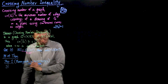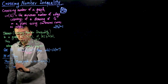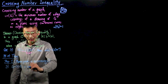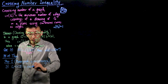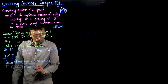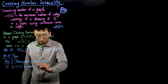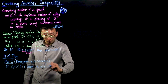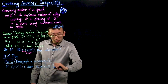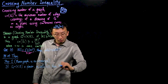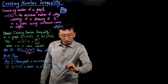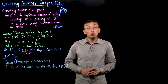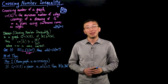The following turns out to be true: if G is a planar graph — meaning it is possible to draw G in the plane without edge crossings, so the crossing number of G equals zero — then the number of edges of G is at most three times the number of vertices. Another way to say this is that the average degree of the graph is at most six.